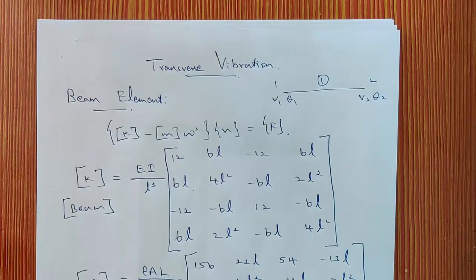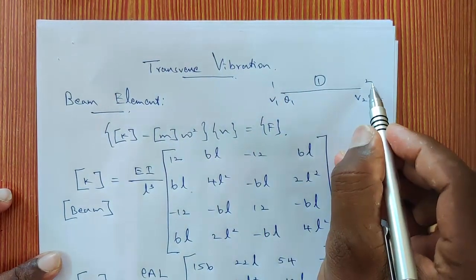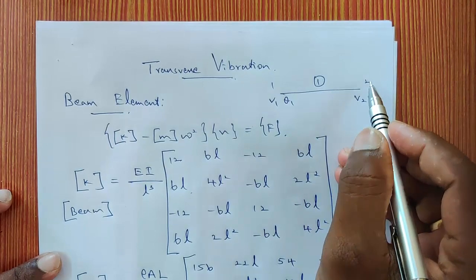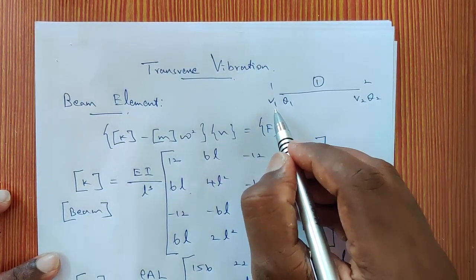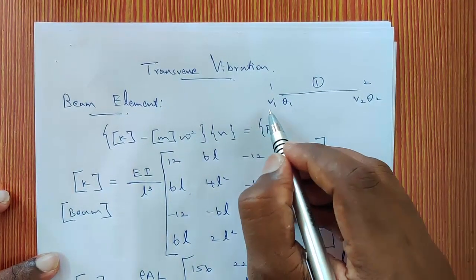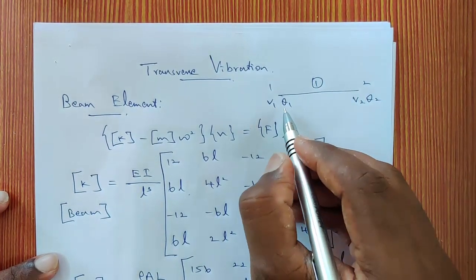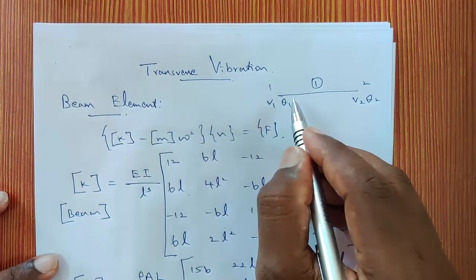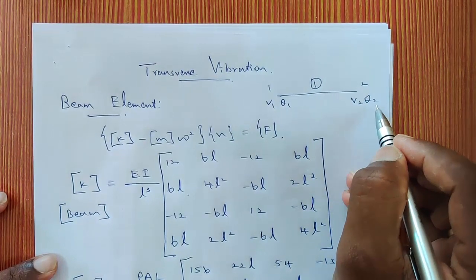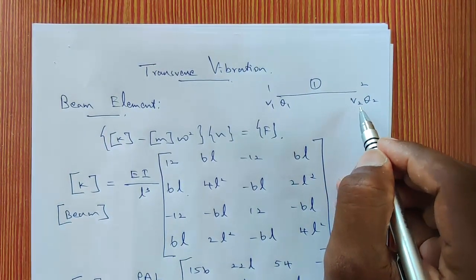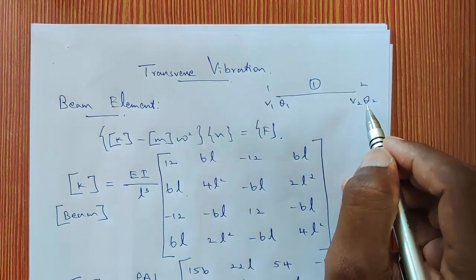In finite element method, a beam has two nodes. At each node it has two degrees of freedom. At node 1 it has v1 and d1, where v1 is displacement along the vertical direction and d1 is the rotation. Similarly at node 2, it has v2 and d2, where v2 is displacement along the vertical direction and d2 is rotation.